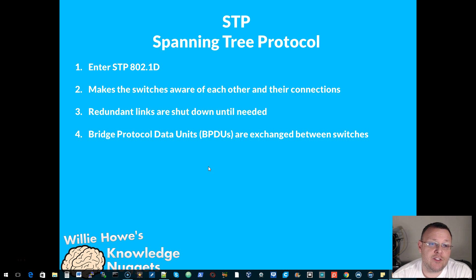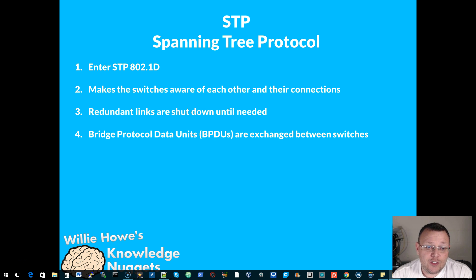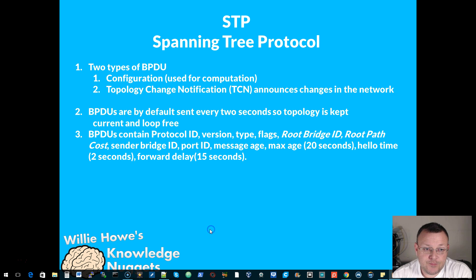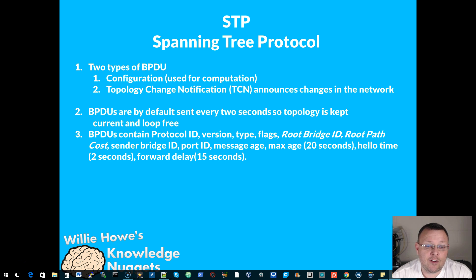Enter STP — Spanning Tree Protocol, 802.1D. What it does is it makes the switches aware of each other and their connections. Redundant links are shut down until needed. It does this using BPDUs, or Bridge Protocol Data Units, that are exchanged between switches. There are two types of BPDUs: one is configuration, which is used for the computation; and the other is topology change notification, which announces changes in the network. BPDUs are by default sent every two seconds, so the topology is kept current and loop-free.